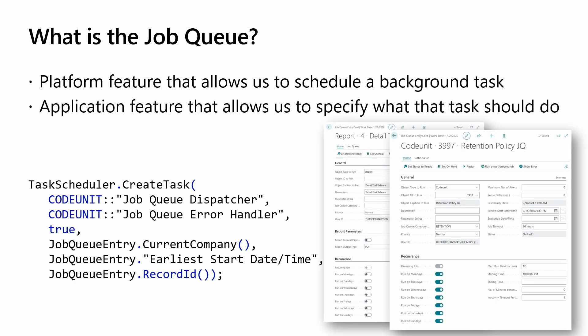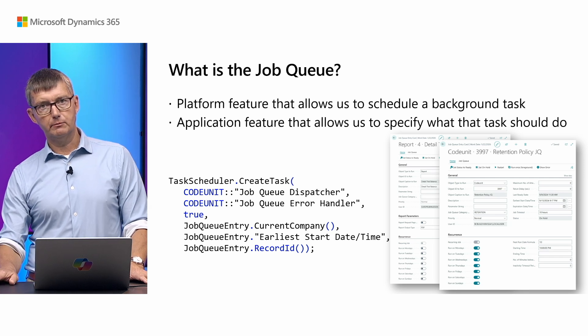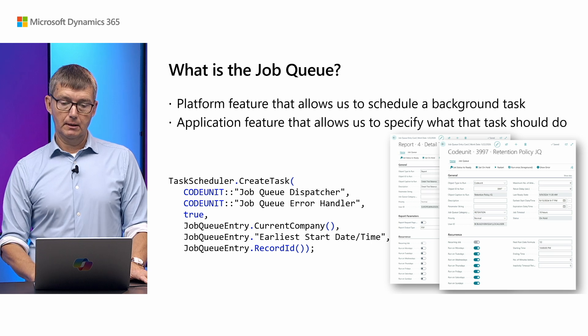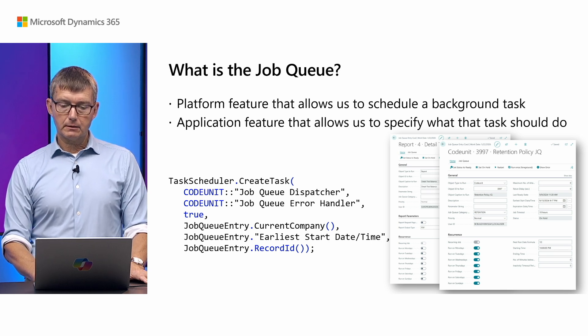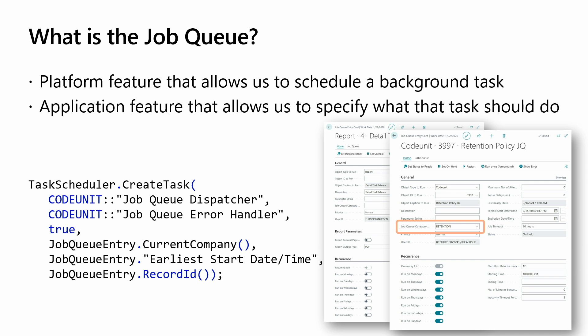It's also an application feature where we have two examples on screen. Maybe we want to run a report or a codeunit, maybe there are some parameters, maybe we want to reschedule it when it's done so we have a recurrence. One particular field we'll touch upon is the category code — the job queue category — which is used if you want only one of these jobs to run at the same time. It's typically used for sales and purchase order posting to avoid locking.